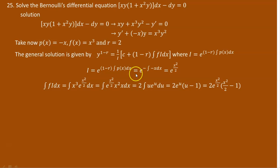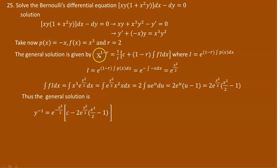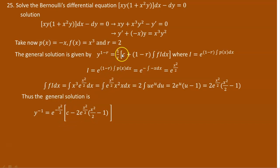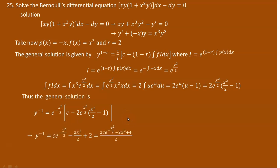Now the general solution can be written. With r equal to 2, the exponent 1 minus r equals minus 1, so y to the power of minus 1 equals 1 over I times c plus (1 minus 2) times the integral of f·I. Since 1 over I equals e to the power of negative x squared over 2, this becomes e to the power of negative x squared over 2 times c, plus negative 1 times the integral of f·I, which was already determined.